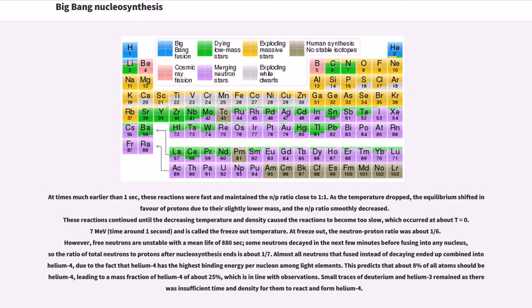At times much earlier than one second, these reactions were fast and maintained the N/P ratio close to 1 to 1. As the temperature dropped, the equilibrium shifted in favor of protons due to their slightly lower mass, and the N/P ratio smoothly decreased. These reactions continued until the decreasing temperature and density caused the reactions to become too slow, which occurred at about T equals 0.7 mega electron volts and is called the freeze-out temperature.